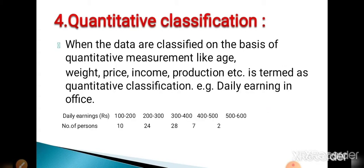Now the next is quantitative classification. If the classification is done on the basis of numerical values, that means quantitative measurements like age, weight, price, income, production, it is called quantitative classification. For example, daily earning in an office — the classification is done on the basis of numerical values, daily earning with number of persons. These are the four types of classification: geographical, chronological, qualitative, and quantitative.